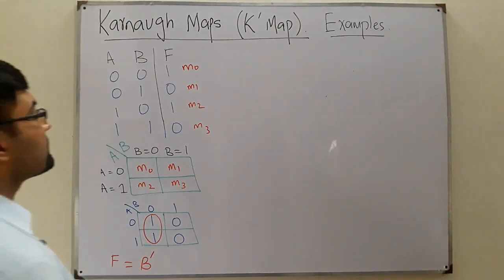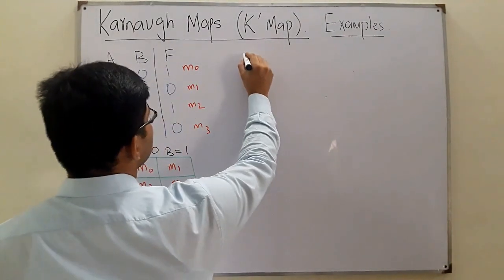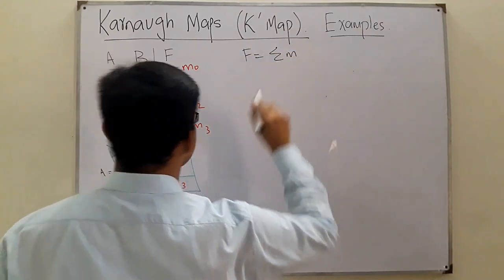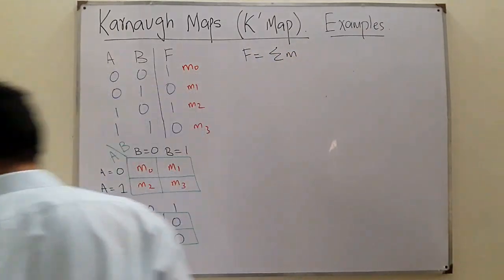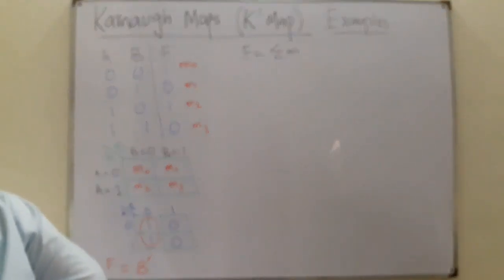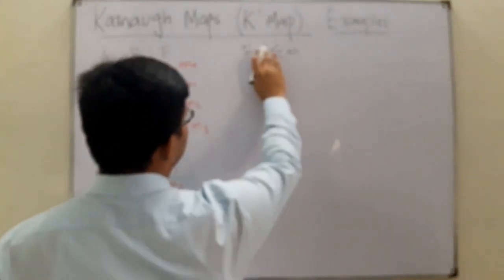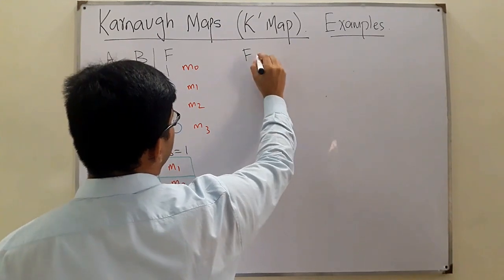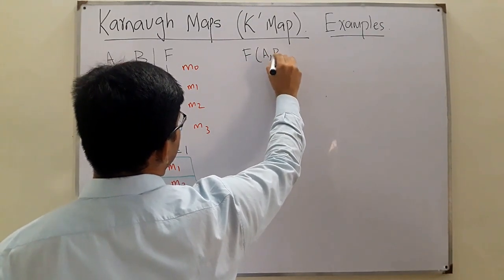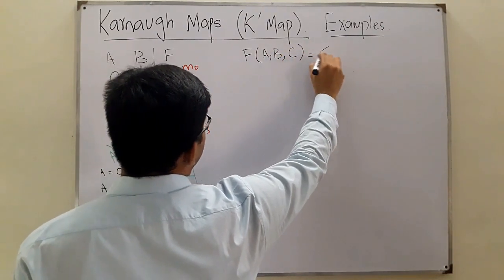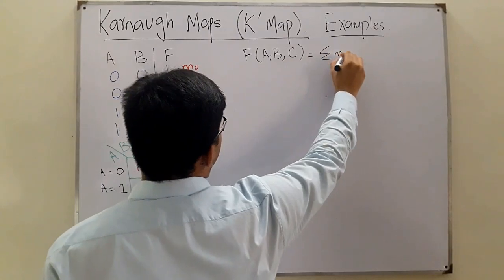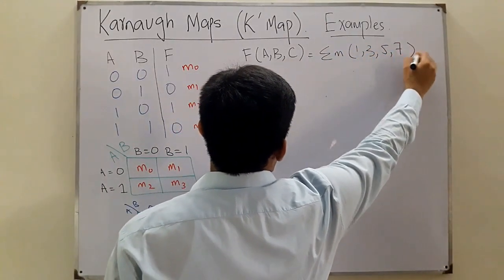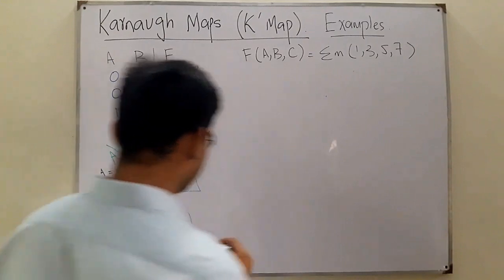Now we move to examples with three variables. Let's say a function f(A, B, C) is given as summation of min terms 1, 3, 5, and 7. This is a three-variable function.